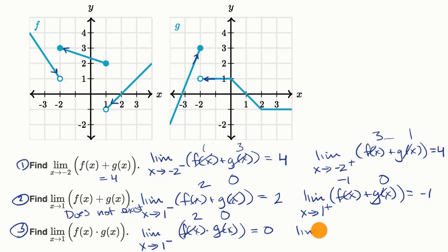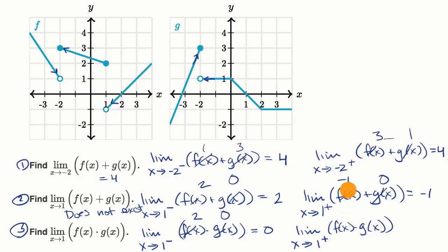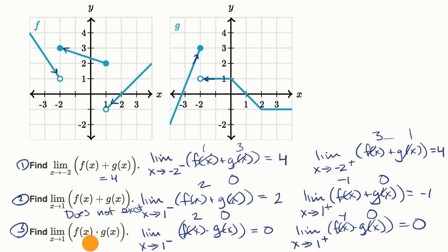When we approach from the right, f of x is approaching negative one and g of x approaching one from the right is still approaching zero, so this is zero again. This limit exists — we get the same limit from the left and right, and it is equal to zero. These are interesting examples, because sometimes when the component limits don't exist, you might think the sum or product won't exist either, but this shows at least two examples where that is not the case.